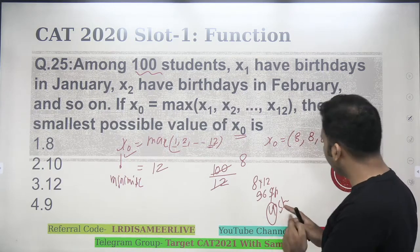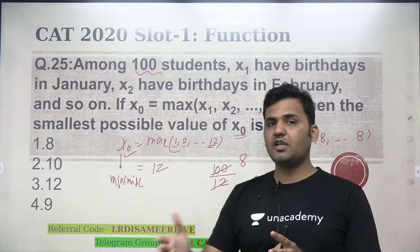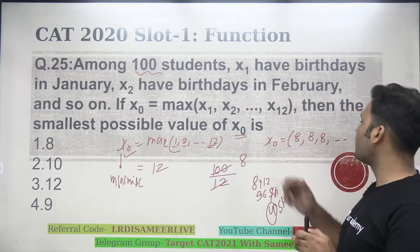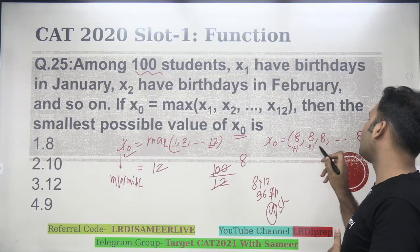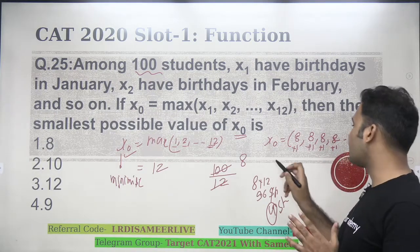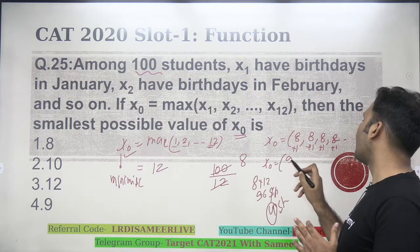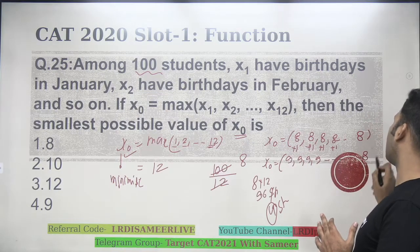But I want to minimize the value of all the, I want to find the minimum possible value of x0. I'll make sure the minimum possible values available in the bracket. Now, do I need to give this whole 4 students to 1 month, or should I distribute it evenly on 4 month? Because I want to minimize, I'll make sure that these 4 students are distributed evenly on first 4 month, or any of the 4 month that you choose. So basically, x0 will be 9, 9, 9, 9, and rest of the values will be equal to 8.